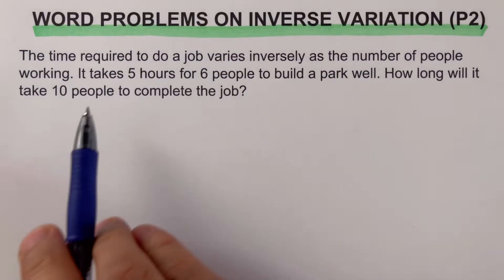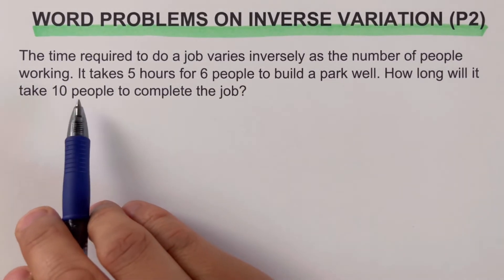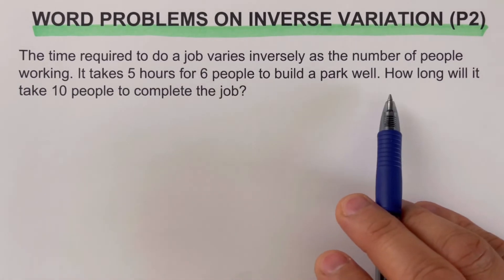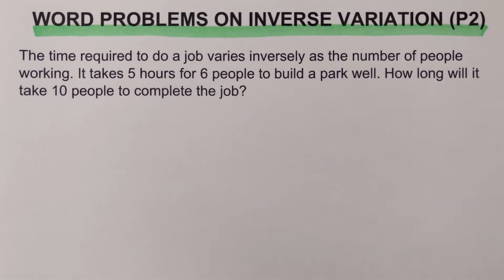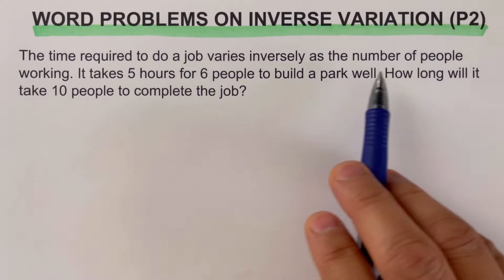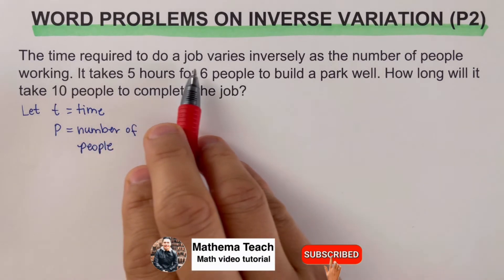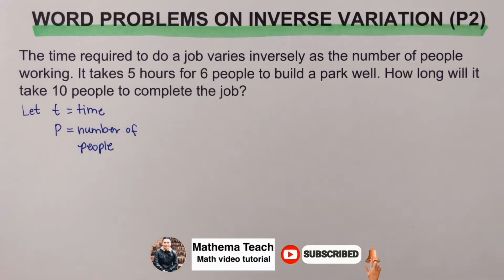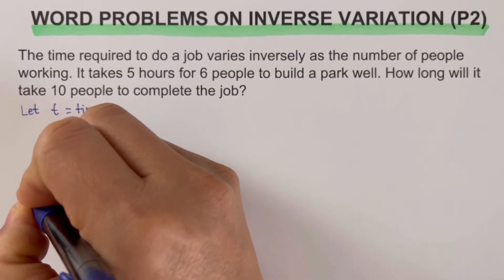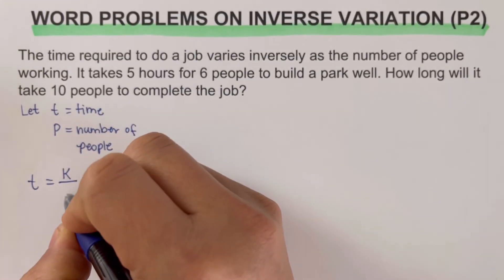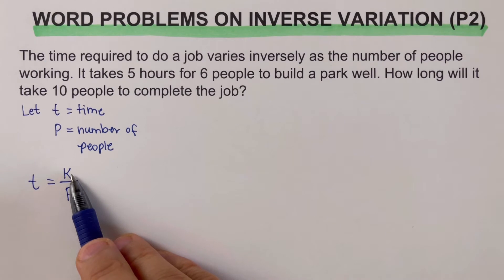Going back to the problem: the time required to do a job varies inversely as the number of people working. It takes five hours for six people to build a park well. How long will it take 10 people to complete that same job? We define the variables — t represents time and p represents the number of people. Since time varies inversely as the number of people, we write t equals k over p, where k is the constant of variation.